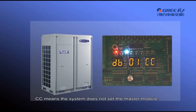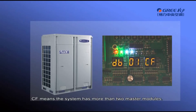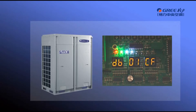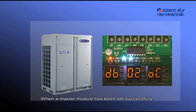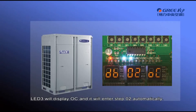CC means the system does not have a master module set. CF means the system has more than two master modules. When a master module has been set successfully, LED3 will display OC and the unit will enter step 2 automatically.